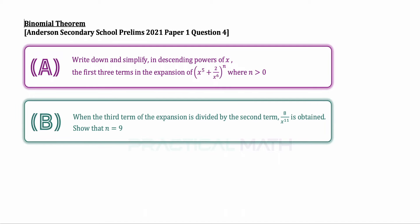In part B of the same question, when the third term of the expansion is divided by the second term, 8 divided by x to the power of 11 is obtained. You are to show that n is equal to 9.